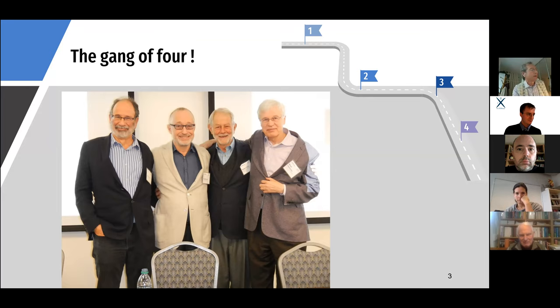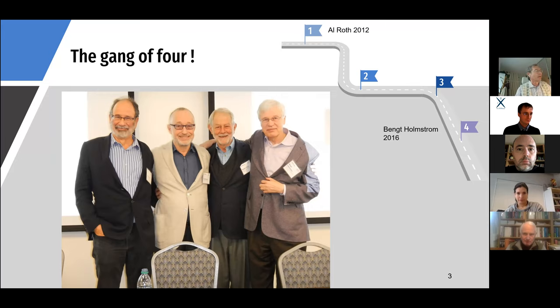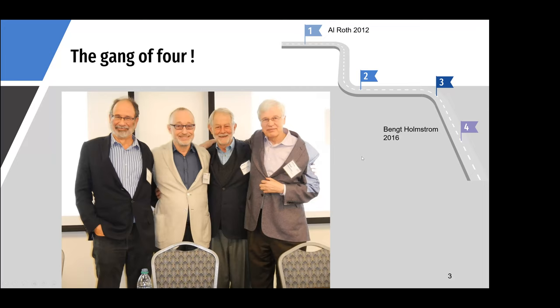Here is the 'gang of four' — Bob's students who received Nobel Prizes. On the left is Al Roth, who received the prize in 2012 for his work on matching, shared with Lloyd Shapley. On the right is Bengt Holmström, who received the prize in 2016 for contract theory, shared with Oliver Hart. In the middle are Paul Milgram and Robert Wilson, pictured at the Nobel ceremony for Holmström some years ago.